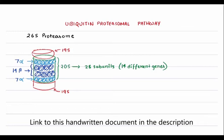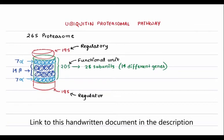The 20S barrel in the middle is basically the functional unit, and the 19S on both sides are the regulatory units. What the 19S performs is recognition — when it sees a protein tagged with ubiquitin, that recognition is done by the 19S. It brings in the protein and puts it inside the 20S where it is degraded. So now we're clear with the structure; let's move on to the process.